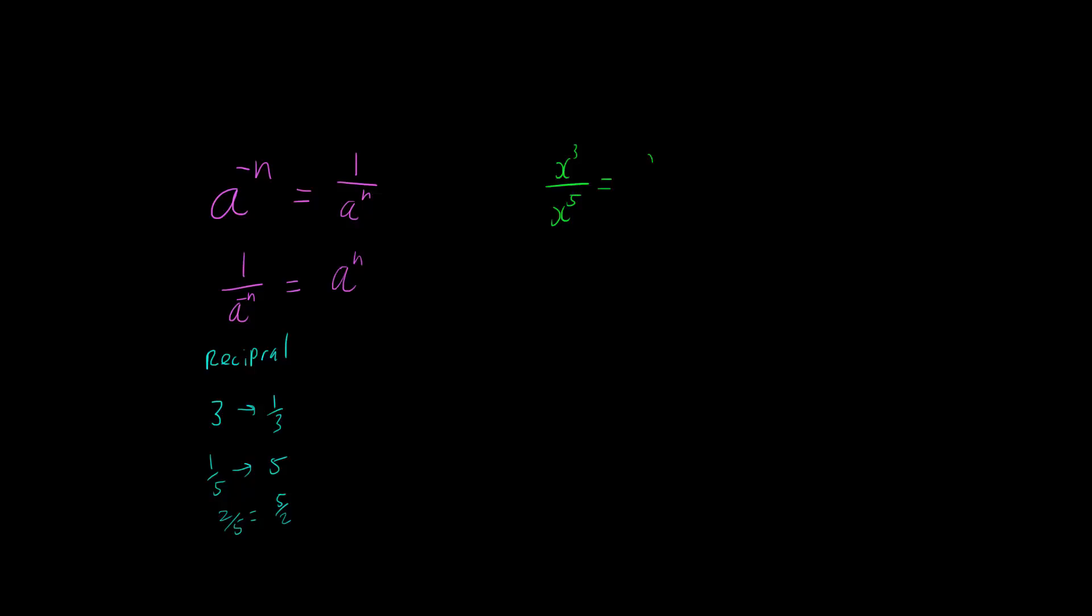so x cubed is x times x times x times x, and x to the 5 is x times x times x times x, 5 x's times together,